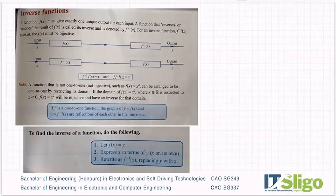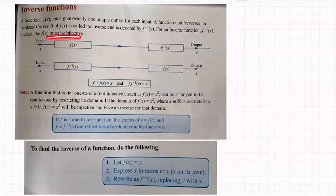A function that reverses or undoes the result of f(x) is called its inverse and is denoted by f to the minus one of x, or f inverse of x. For an inverse function f inverse of x to exist, the f(x) must be bijective, and I will say this again and again. So this works for bijective functions only.